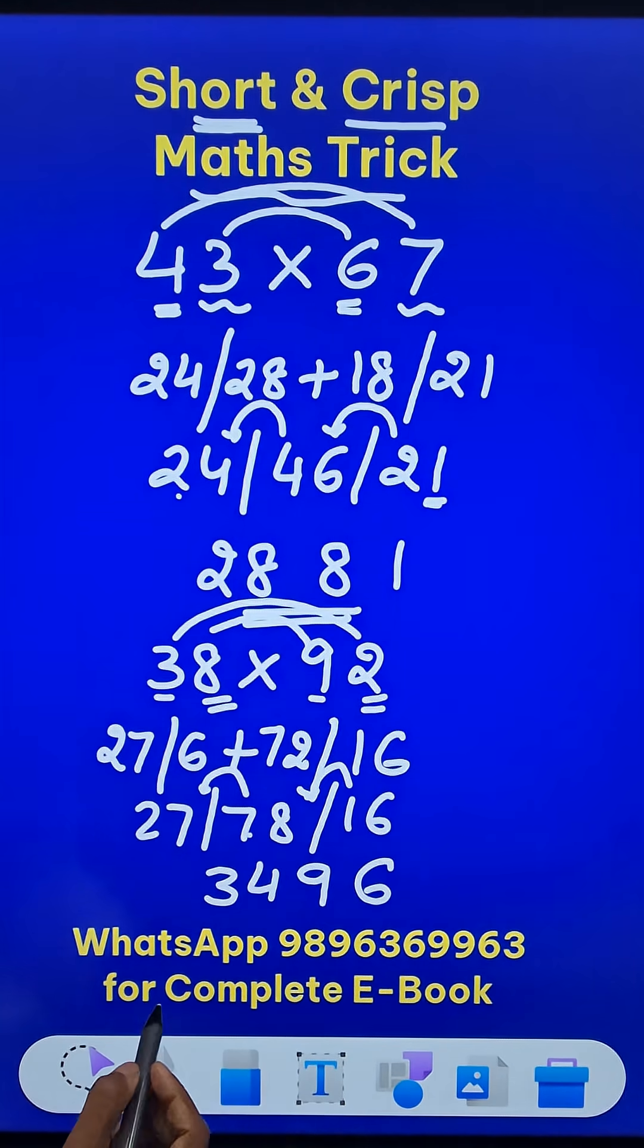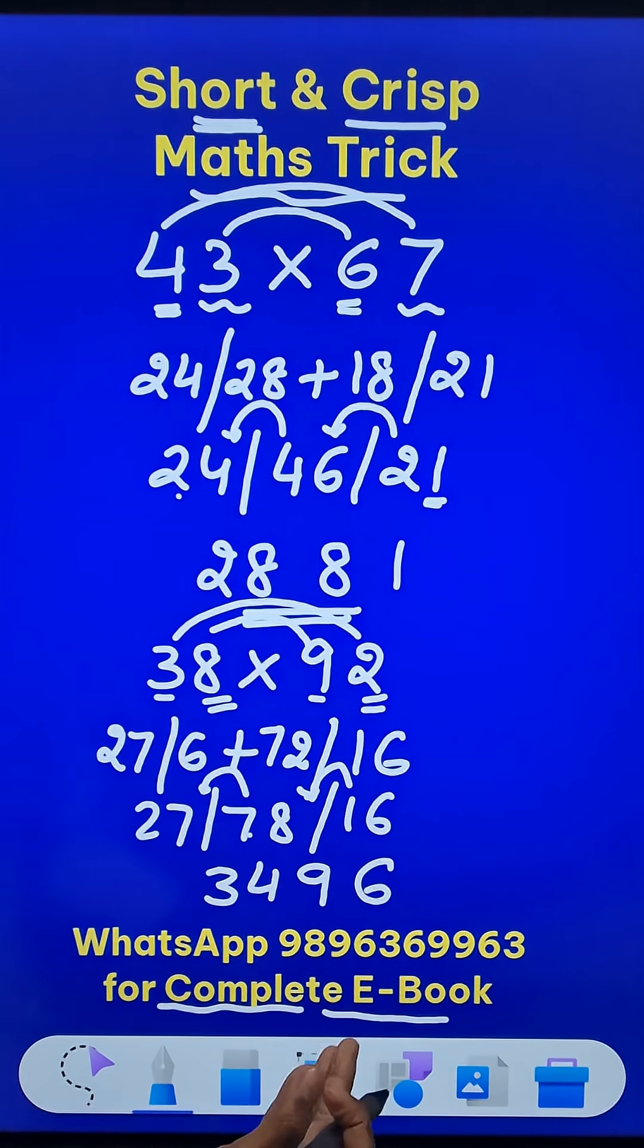For more such amazing short tricks you can go for the complete ebook of short tricks containing 300 such short methods. Just send me a message on WhatsApp 9896369963 is the number.